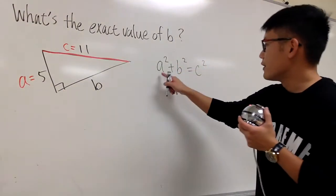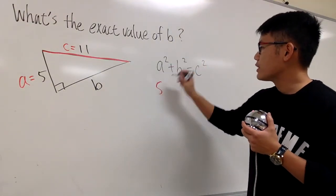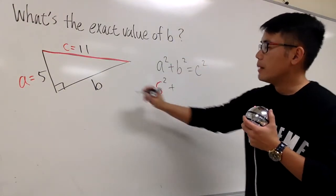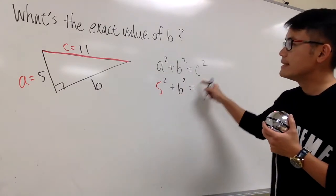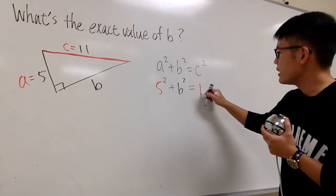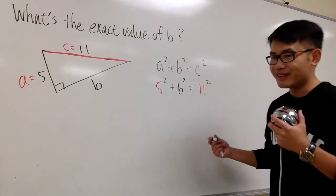a is 5, so I put down 5 for a, we have 5² + b, we don't know yet, b², and this is equal to c is 11, so put down 11 here and square that. And just work this out.